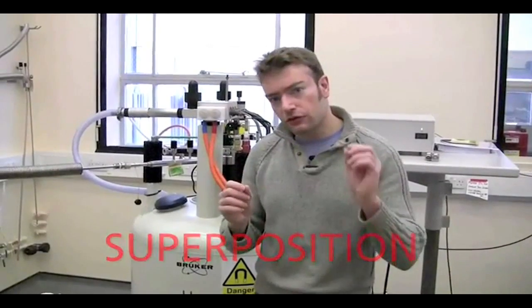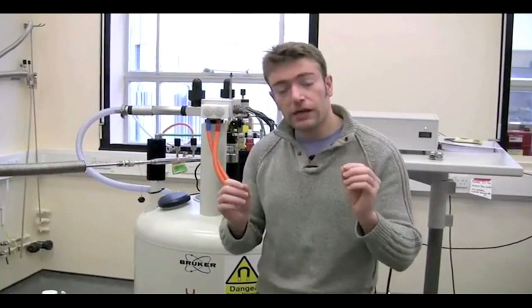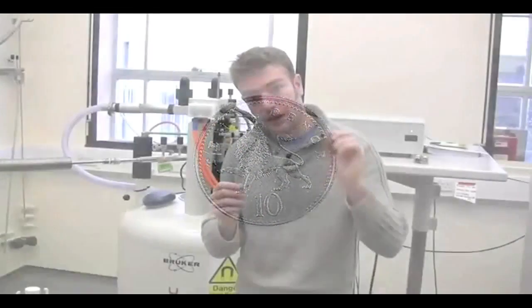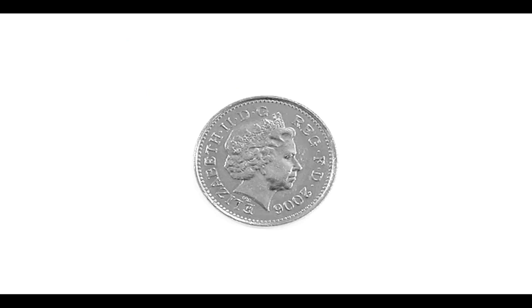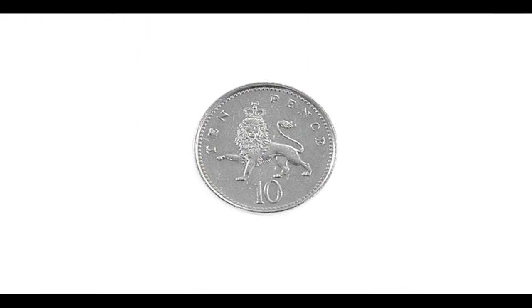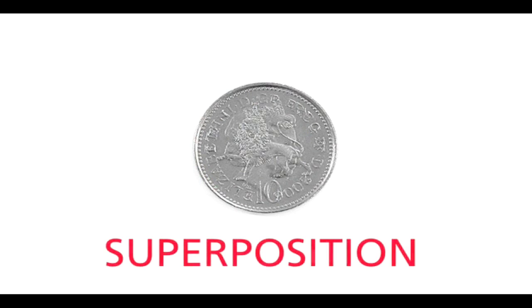Quantum superposition is the ability for certain very small objects to be in two or more states at the same time. Imagine a coin, but not a conventional coin, a minute coin at the nanometer scale. If I could somehow toss it, then it wouldn't need to be in simply heads or tails at the end. It could be simultaneously showing us heads and tails. It would have entered a state of quantum superposition.